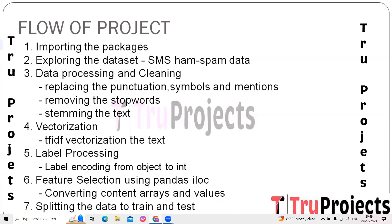Label processing is a crucial step when dealing with categorical data such as class labels. For SMS ham/spam data, this involves converting categorical labels (ham, spam) into numerical format using label encoding, where each unique label is assigned a unique integer. Feature selection using Pandas iloc is then used to select relevant columns from the processed dataset as input features for the machine learning model.